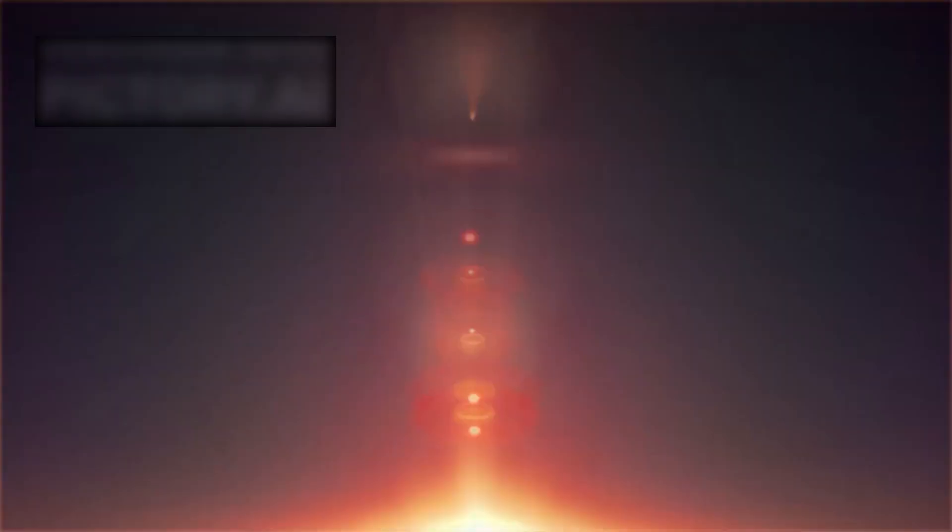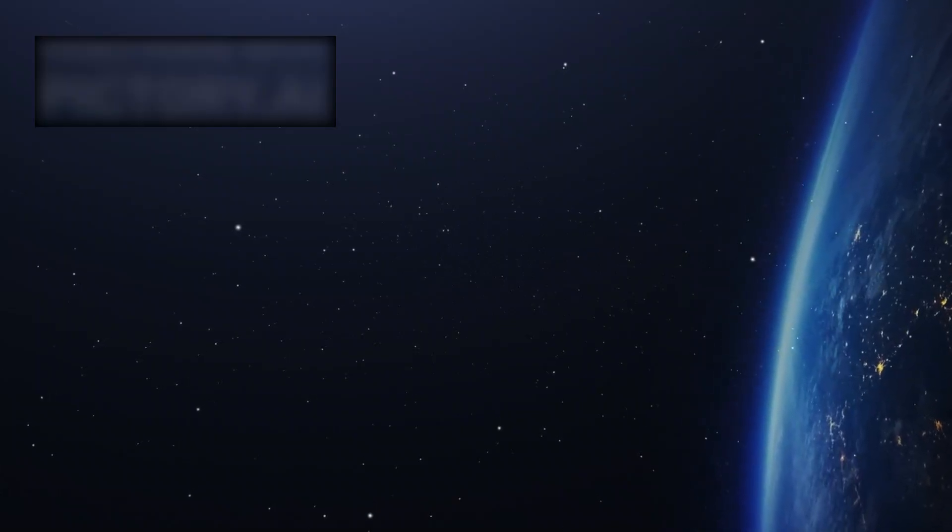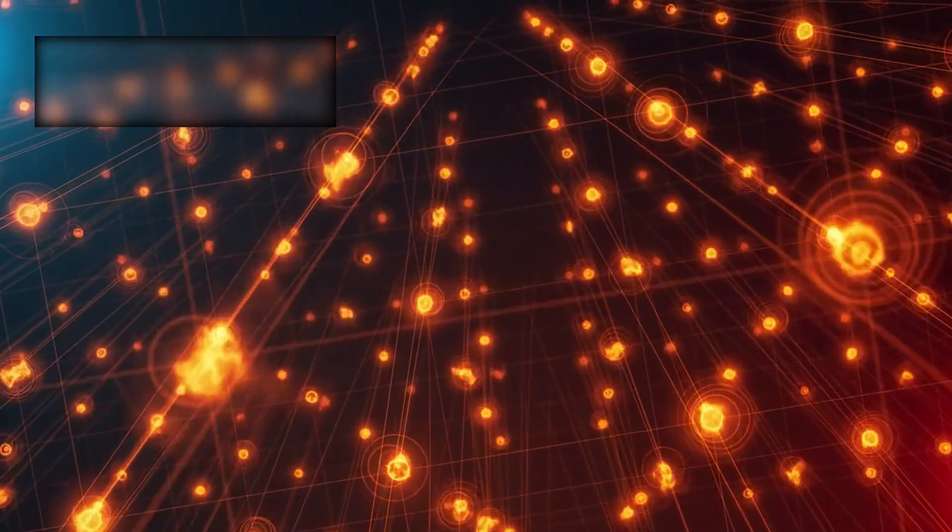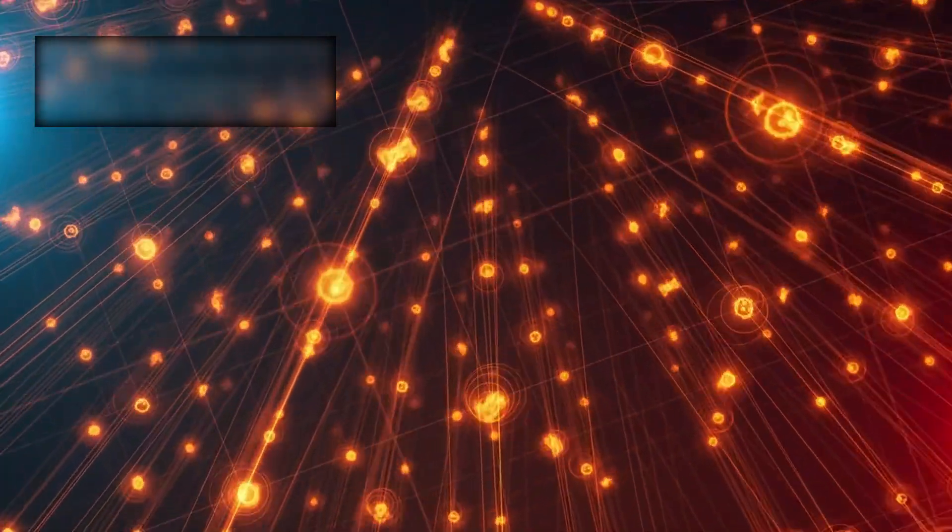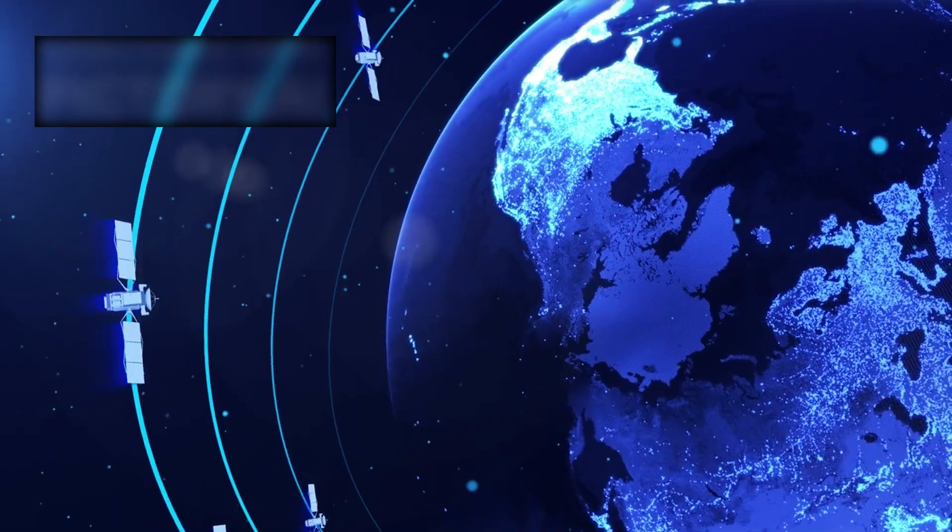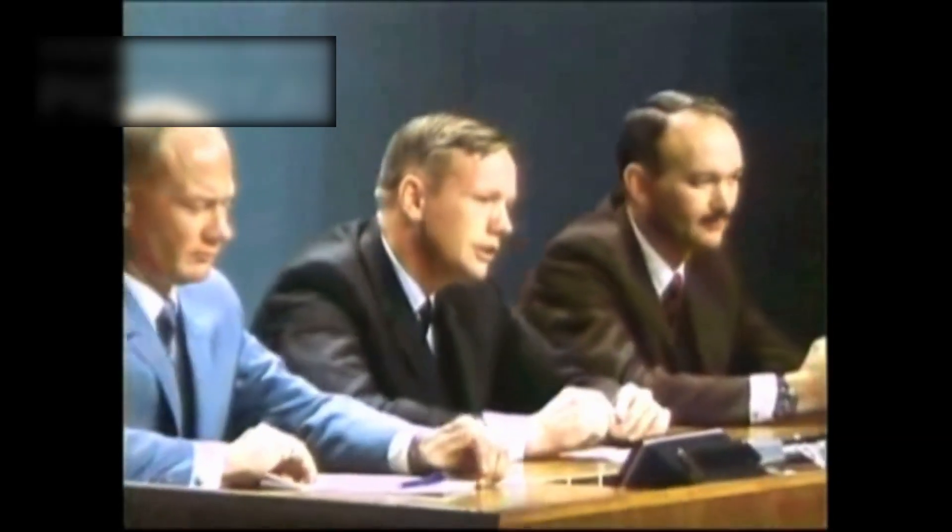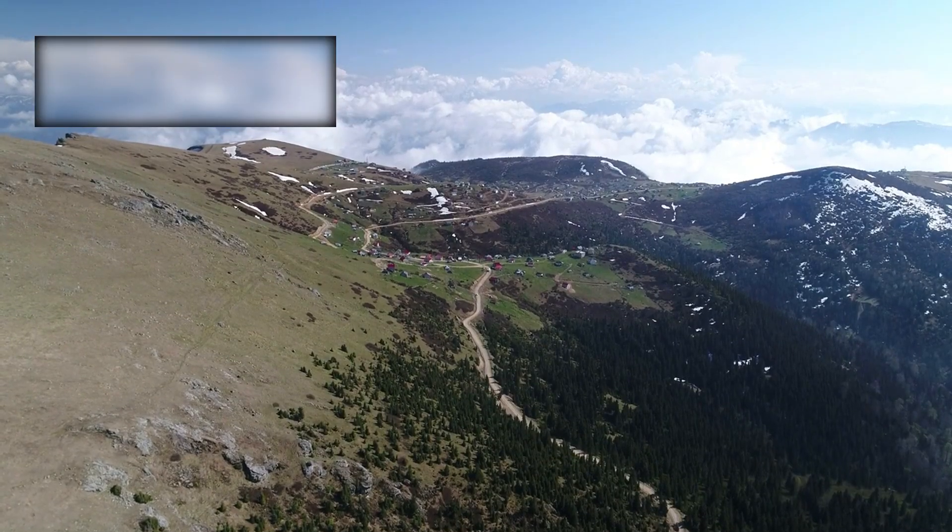It arrives as particles. Charged. Energetic. Capable of passing through materials that feel solid to us. Earth's atmosphere protects life on the surface. Our magnetic field bends many of those particles away. But protection is not uniform. Satellites operate above most of that shielding. Astronauts live within its margins. High-altitude aviation brushes against it.